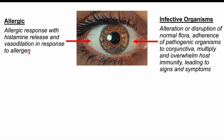With infective organisms, there is an alteration or disruption of the normal flora. Remember that normal flora colonizes the conjunctiva and can compete against pathogenic organisms. But in some cases, that normal flora is disrupted, allowing pathogenic organisms to adhere to the conjunctiva. Those organisms can then multiply and overwhelm the host immunity, leading to signs and symptoms.